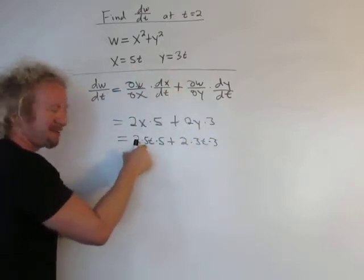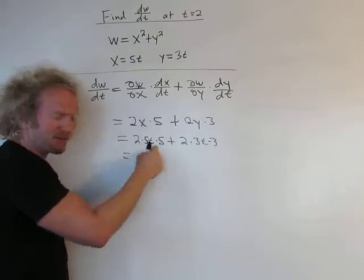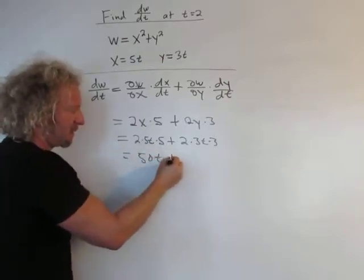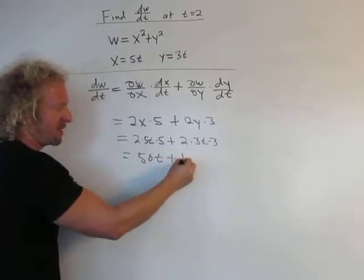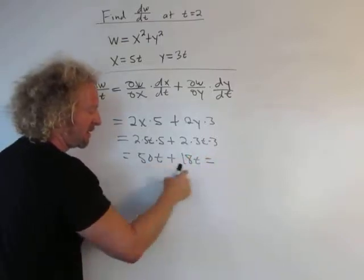Simplifying, 10 times 5 is 50, so 50t, plus 6 times 3 is 18, so 18t. That's going to be 68t.